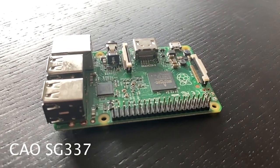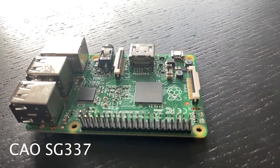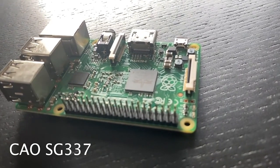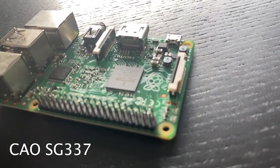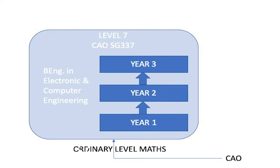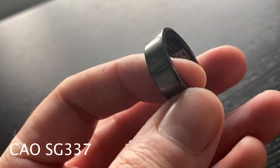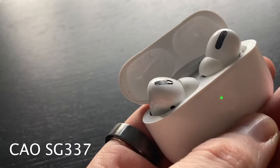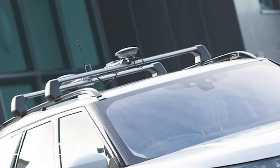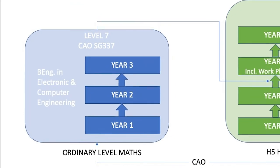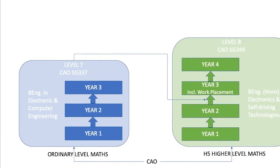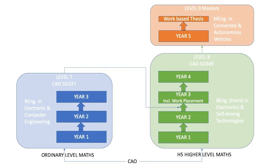If you are interested in technology or engineering but are not doing higher level maths, why not consider our level 7 in electronic and computer engineering? This is a three-year program that looks at the design and development of embedded electronic systems. These are the medical devices that keeps us healthy, the consumer devices that keeps us entertained, or the controlled systems that keeps us safe on the road. You can then progress onto the level 8 in electronics and self-driving technologies and from there to the masters. Check out the link below for more information.